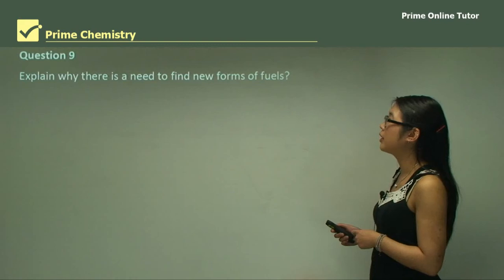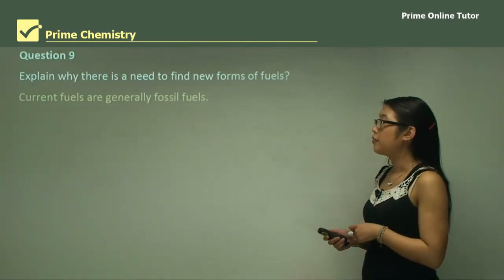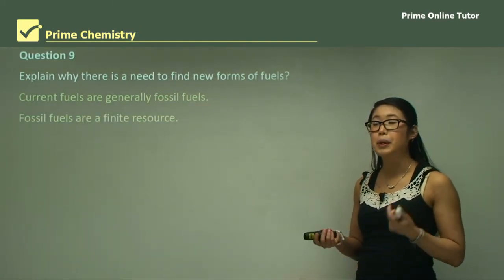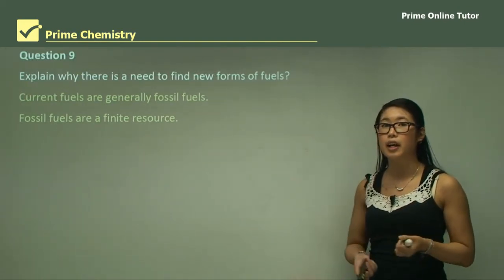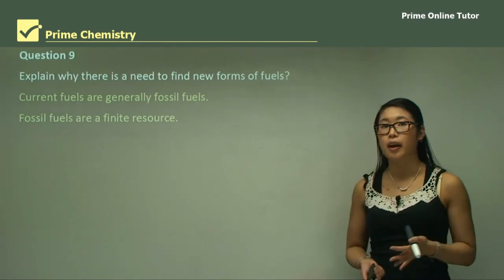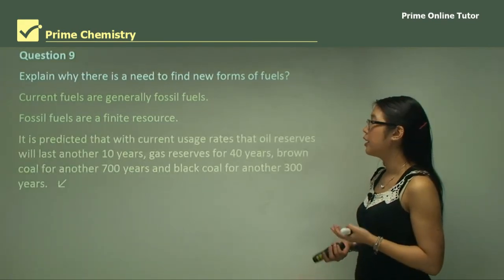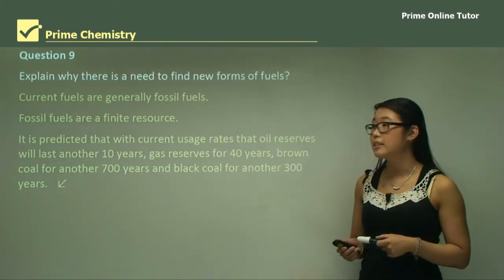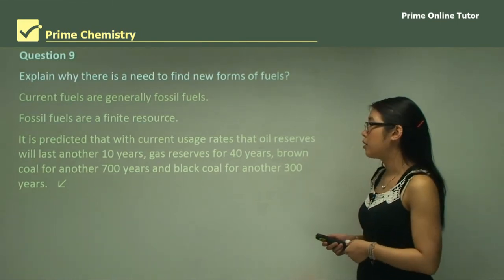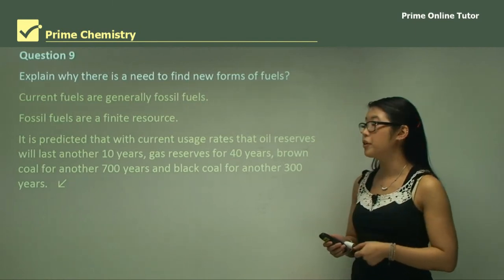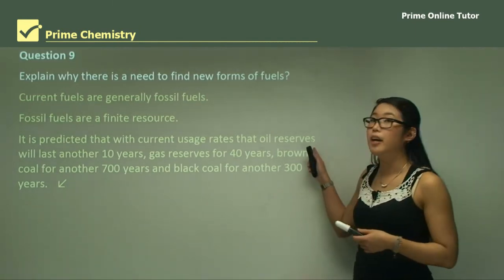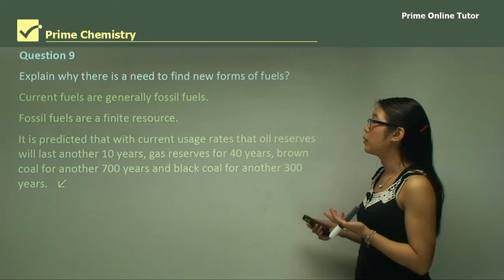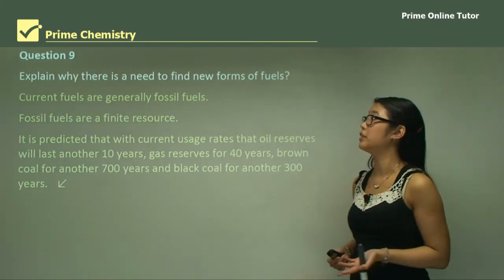Question nine: explain why there is a need to find new forms of fuel. Currently the fuels we use are generally fossil fuels, which are a finite source because they were made millions of years ago from plants and animals that have died. We have only a set amount stored in the ground. It's predicted that oil reserves will last only another 10 years, gas reserves about 40 years, brown coal another 700 years, and black coal another 300 years. So we need to find new ways to power our energy needs and look at renewable energy.